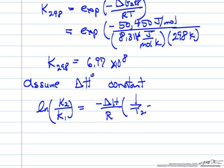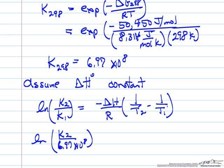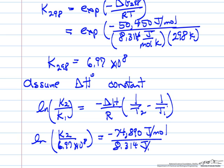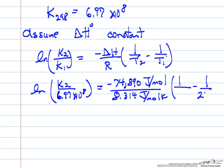We calculated 6.97 times 10 to the eighth for K₁ at 298K. The heat of reaction from formation data is written in joules per mole. The gas constant is 8.314 joules per mole per Kelvin, T₁ is 298K, and 644 degrees centigrade is 917 Kelvin.